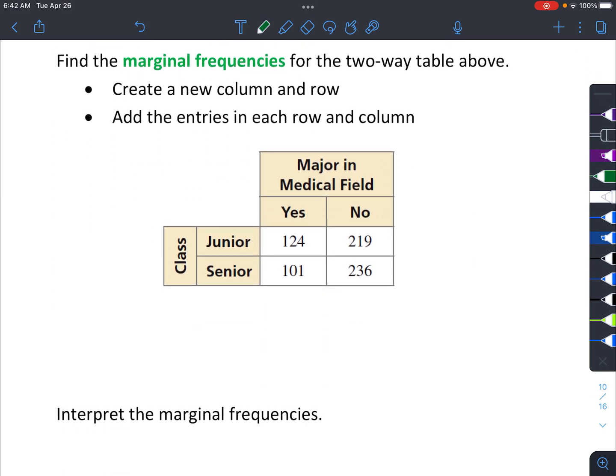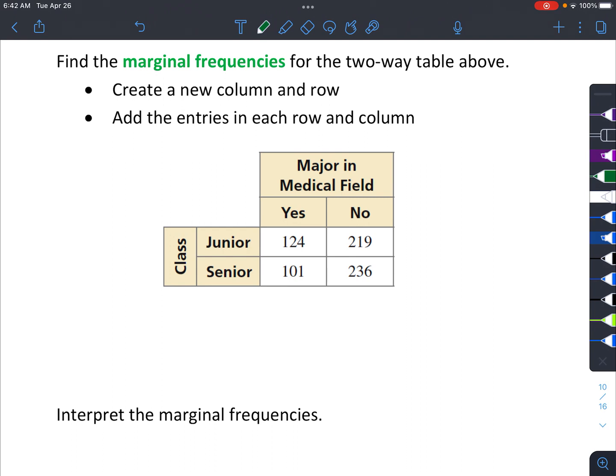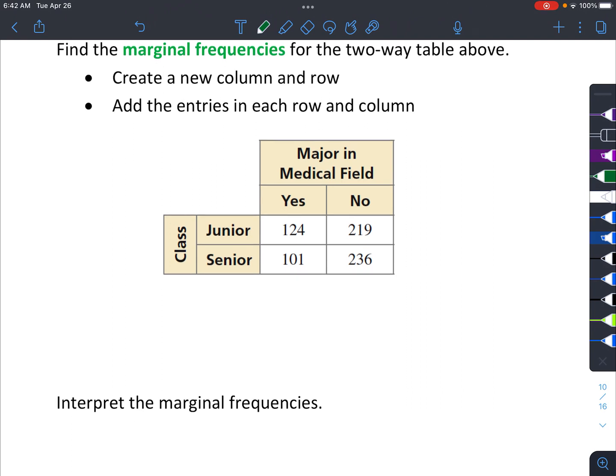Okay. So we're going to find the marginal frequencies for the two-way table. I just recopied it one more time down here. And you basically just add the numbers. So 124 plus 101 is 225. And then 219 plus 236 is 455. And then add the rows as well. So 124 plus 219 is 343. You can definitely grab a calculator to do this. 101 plus 236 is 337.